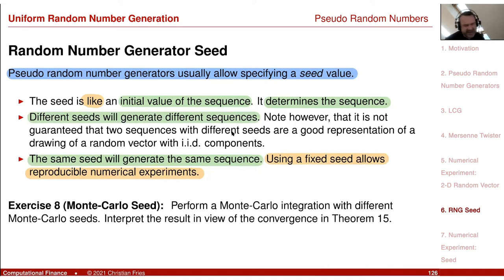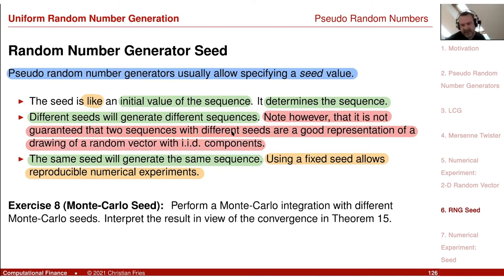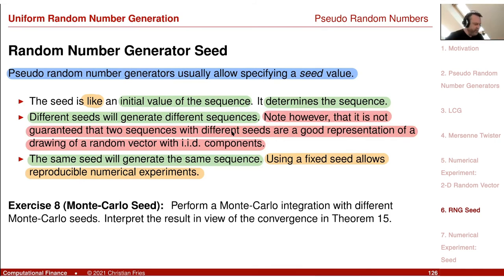Note that it is not guaranteed that two sequences with different seeds are a good representation of a drawing of a random vector with iid components. For instance, if the second initial value is just the first value after the initial value of the first sequence, you have two different sequences that are simply shifted by one value. So be careful when using different seeds — though I sometimes do use different seeds to generate different experiments.